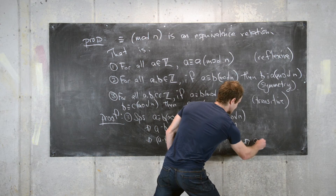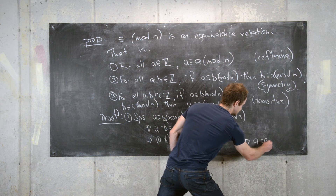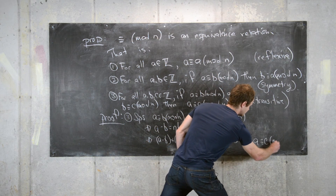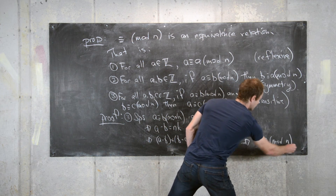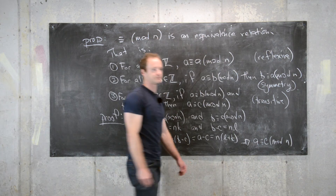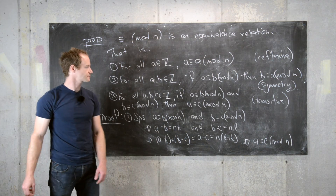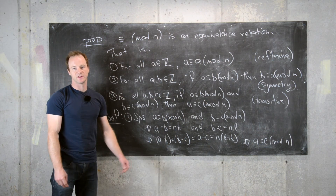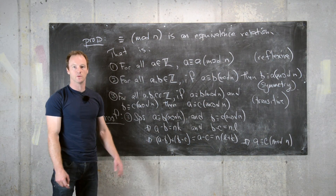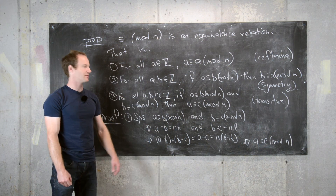Therefore, a is congruent to c mod n, completing the proof of transitivity. That's the end of the video; we'll look at more properties of congruence in the next video.